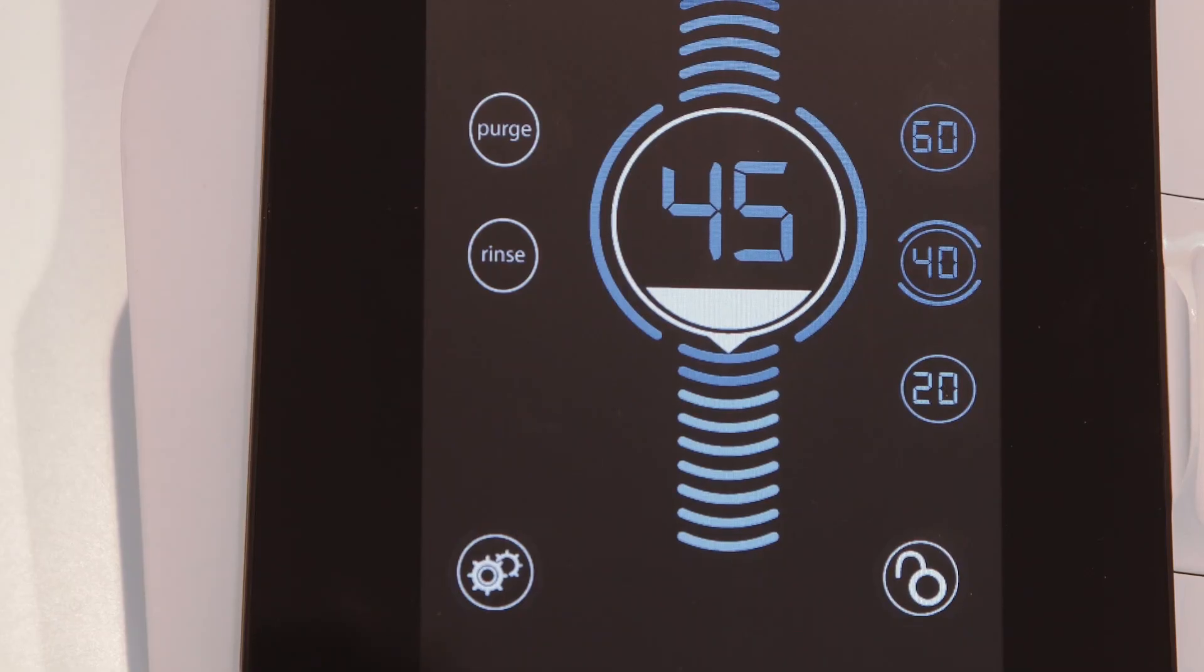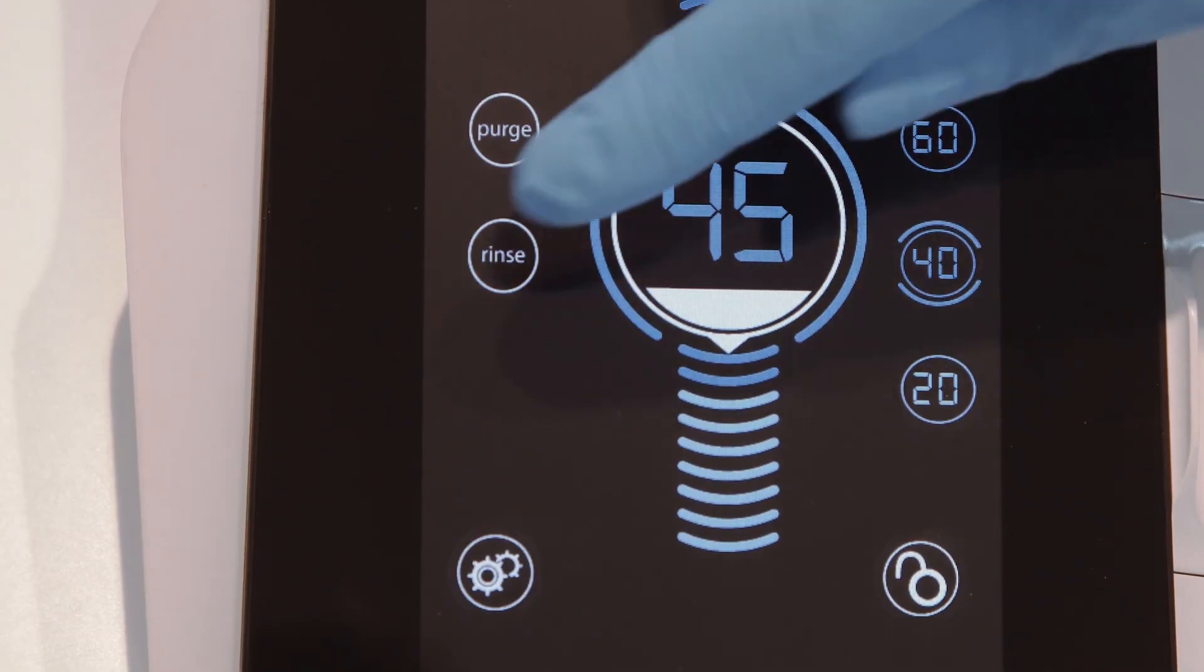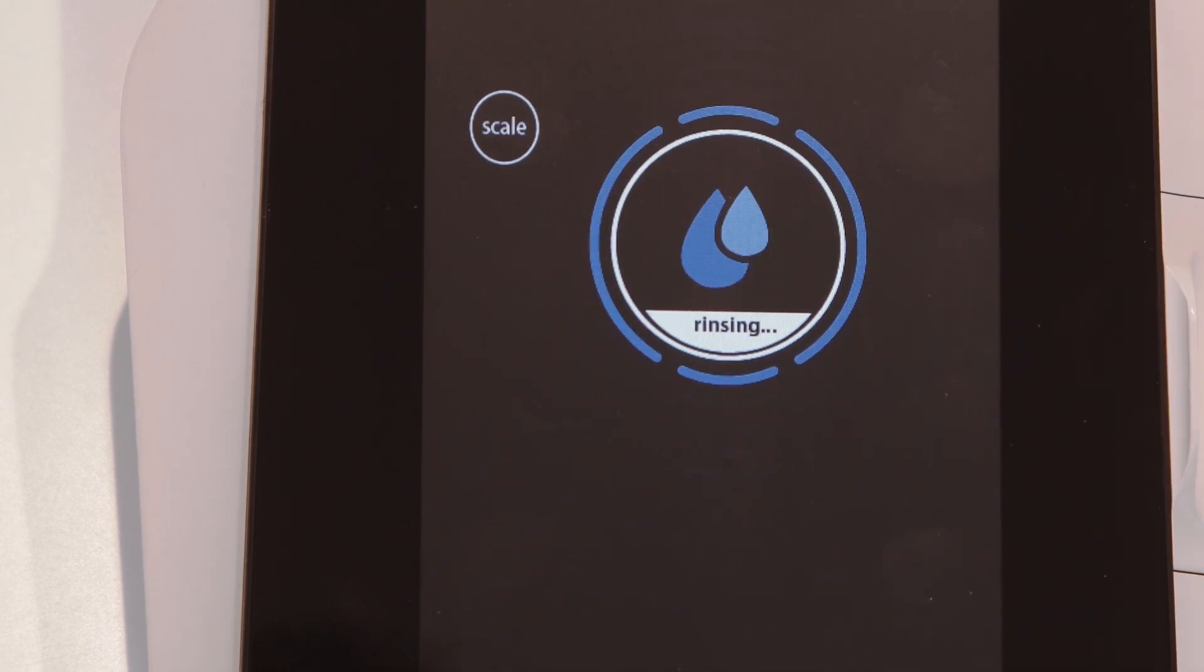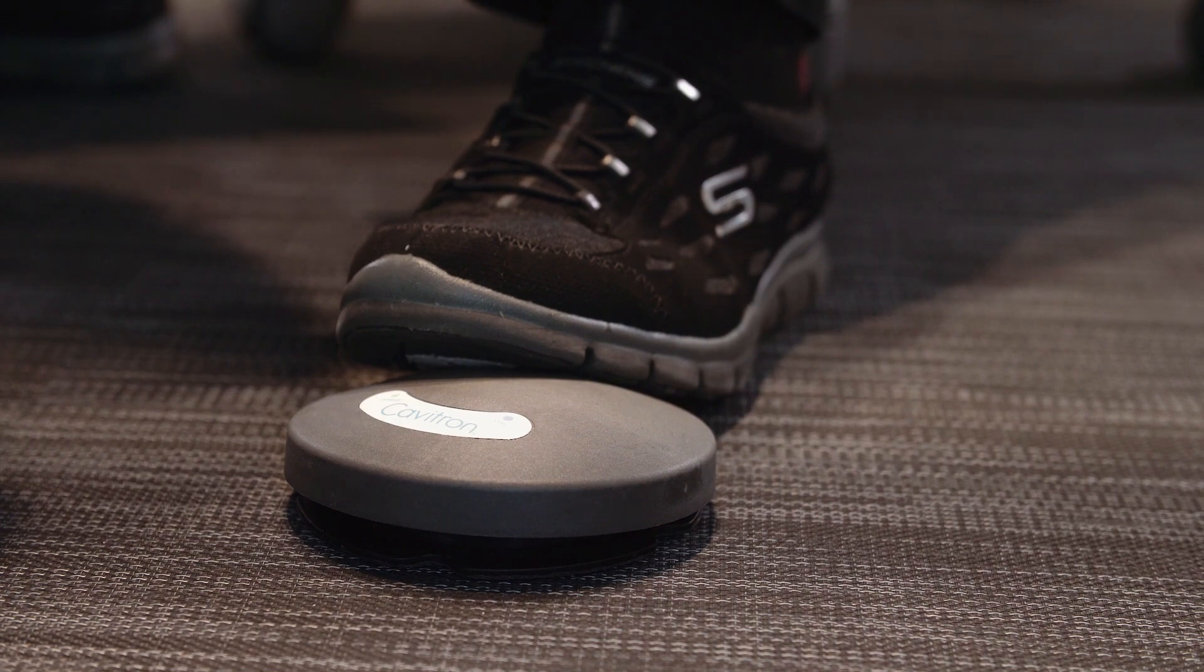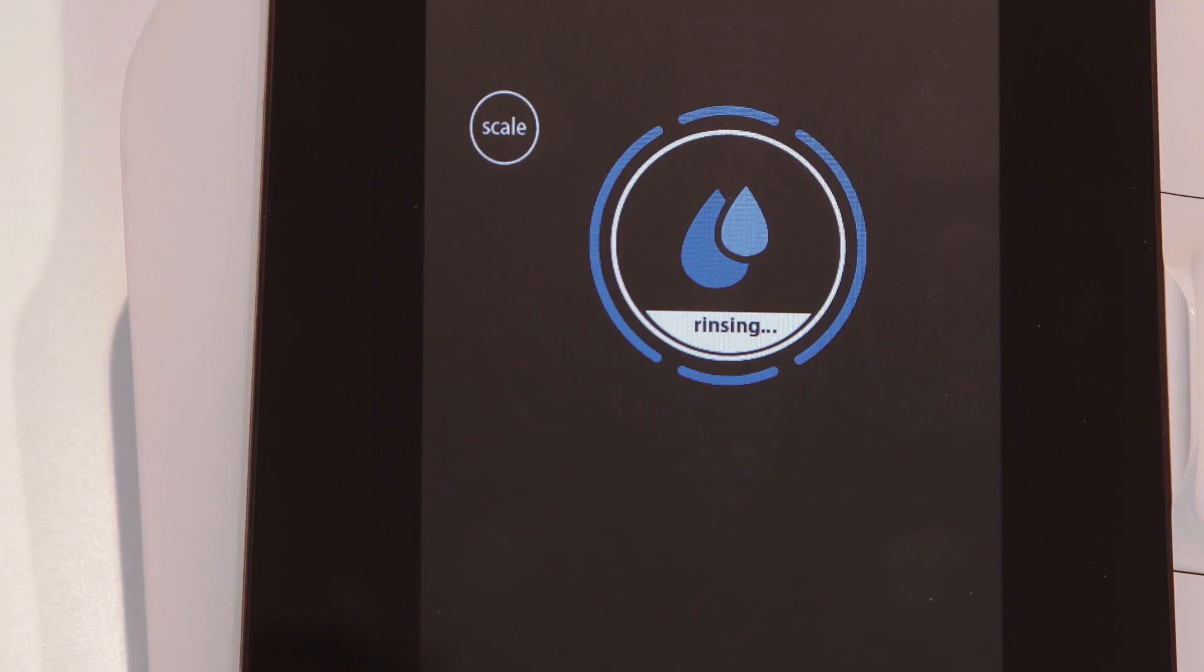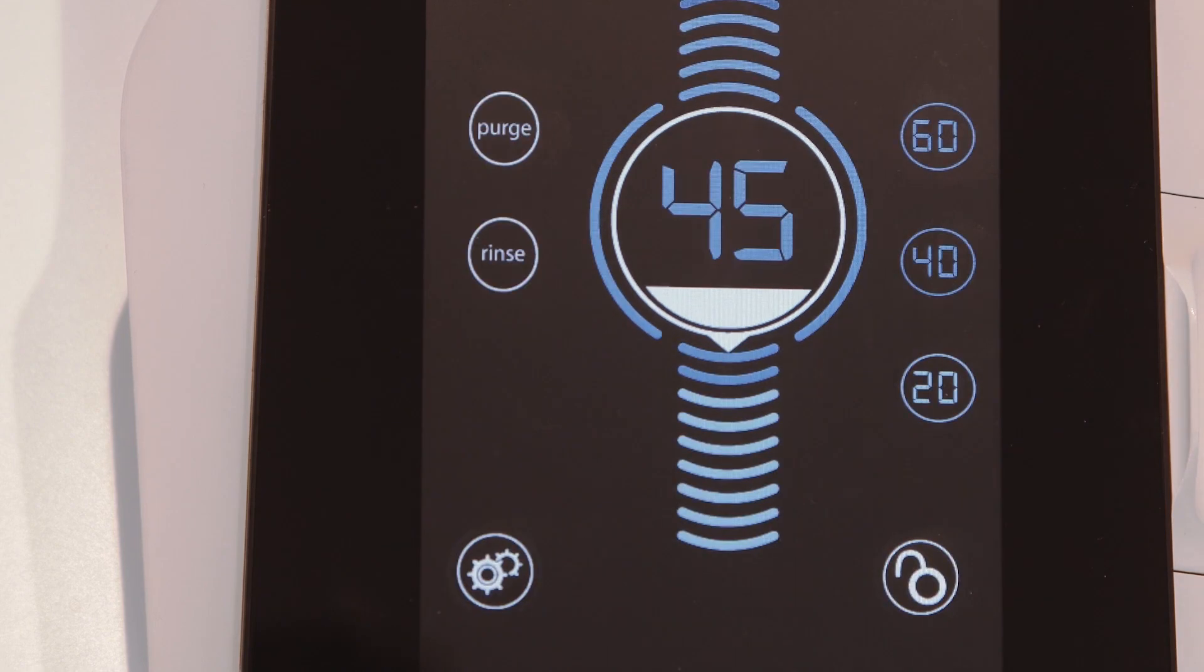Users will operate this feature during an ultrasonic scaling procedure when lavage is desired with no cavitation. To use, depress and hold the foot pedal for rinse mode cycle. To exit rinse mode, tap the scale button to return to the main screen.